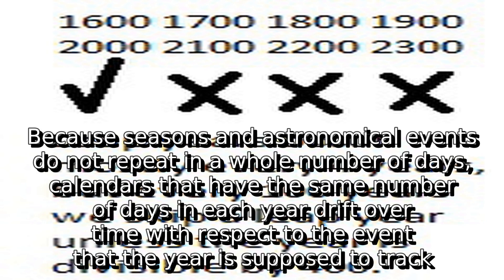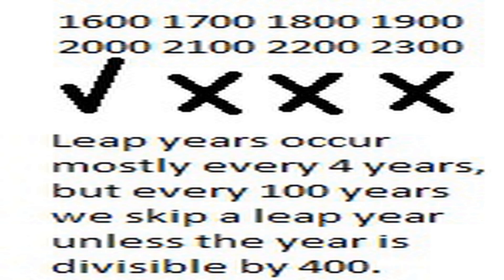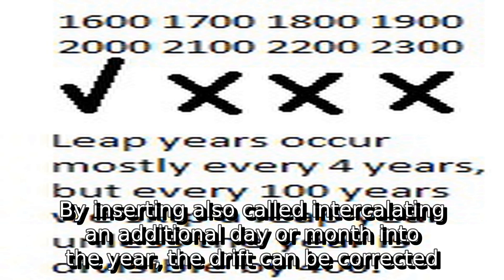Because seasons and astronomical events do not repeat in a whole number of days, calendars that have the same number of days in each year drift over time with respect to the event that the year is supposed to track. By inserting — also called intercalating — an additional day or month into the year, the drift can be corrected.